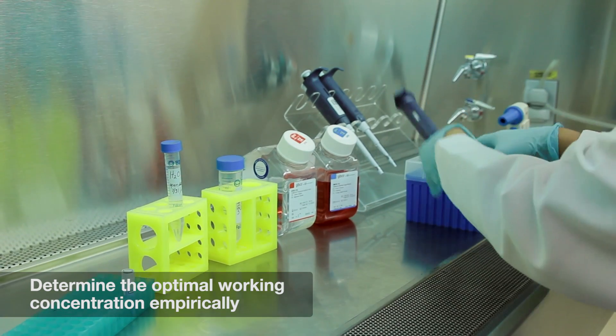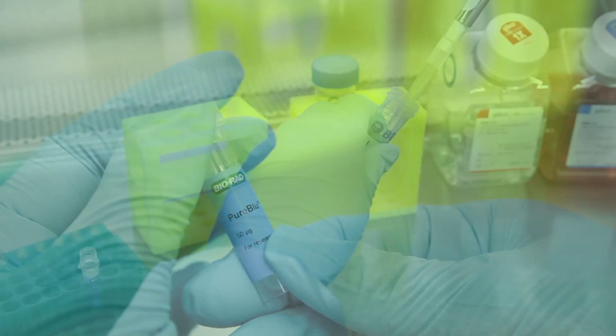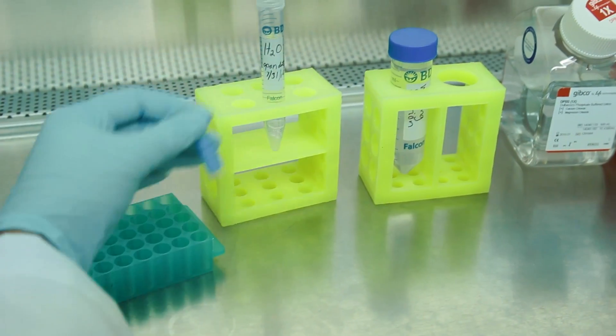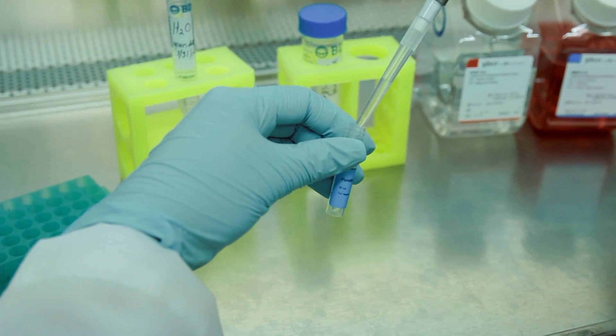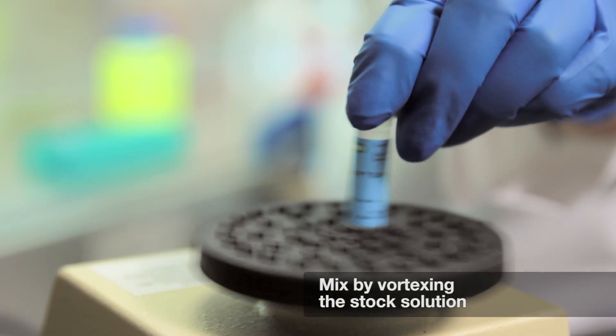To stain your fixed cells, first create a working solution. Take one vial of your Pure Blue DAPI dye and add 500 microliters of deionized water to generate a 100x stock solution, and then mix the tube by vortexing.